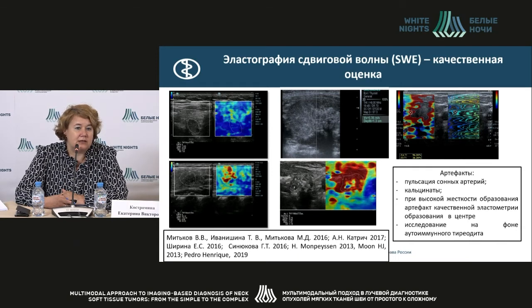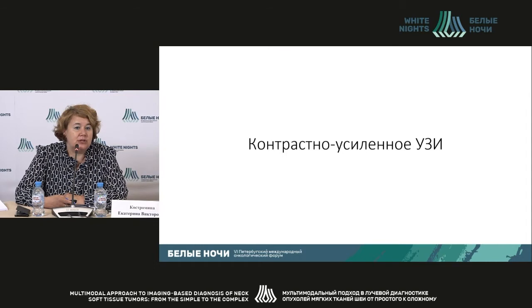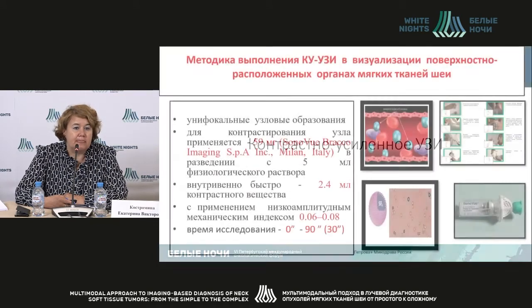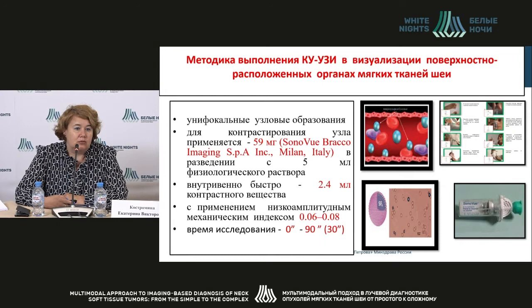Shear wave elastography enables us to identify rigid areas and assess them, illustrated here with papillary cancer cases. The same artifacts apply. Additionally, there is another artifact: when there is no quality assessment of elastometry, a so-called gray zone appears in the center of a very rigid node. Studies are also difficult in cases of autoimmune thyroiditis.